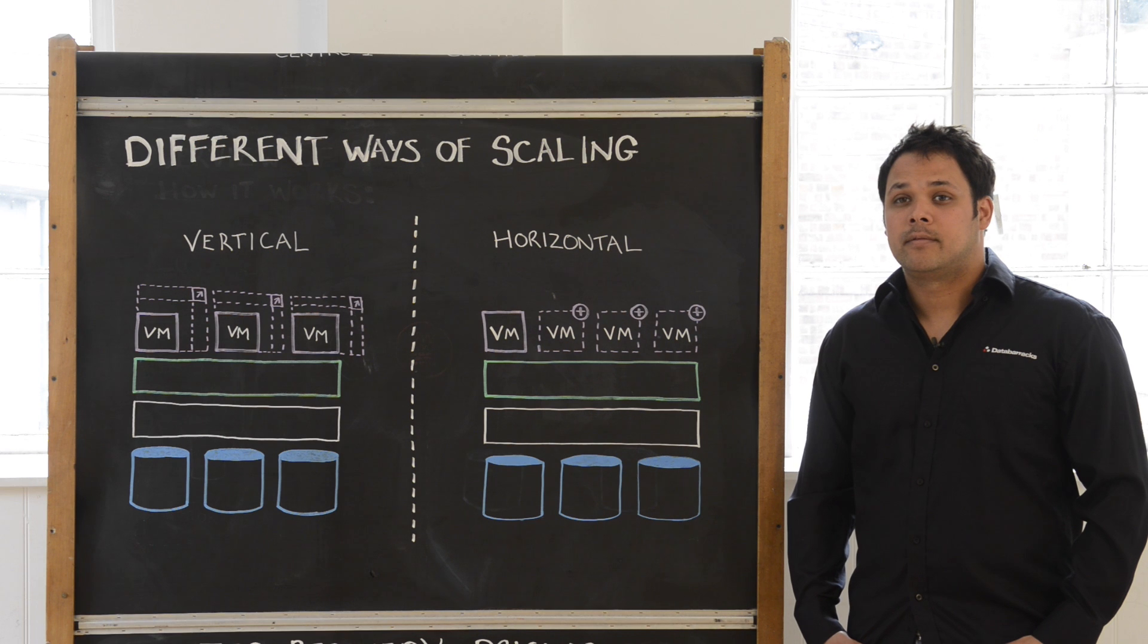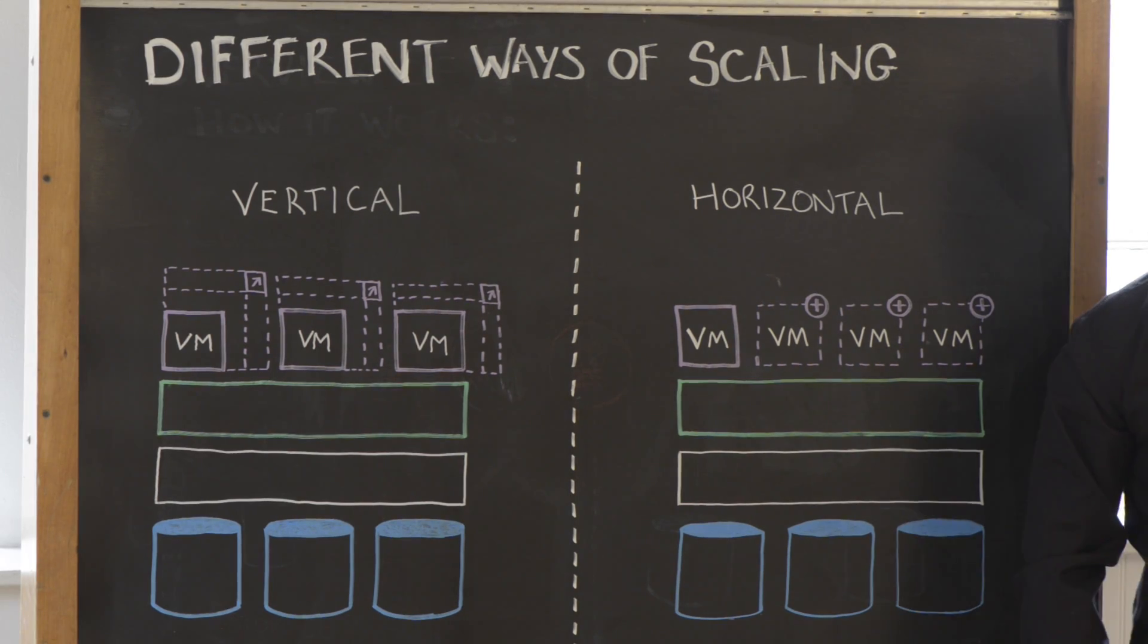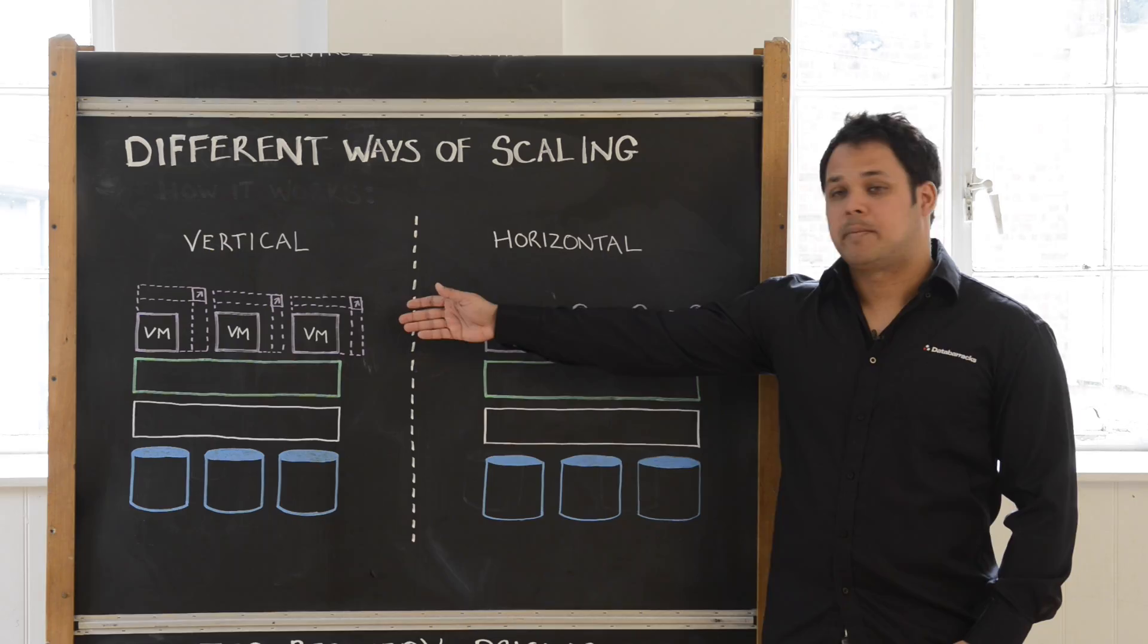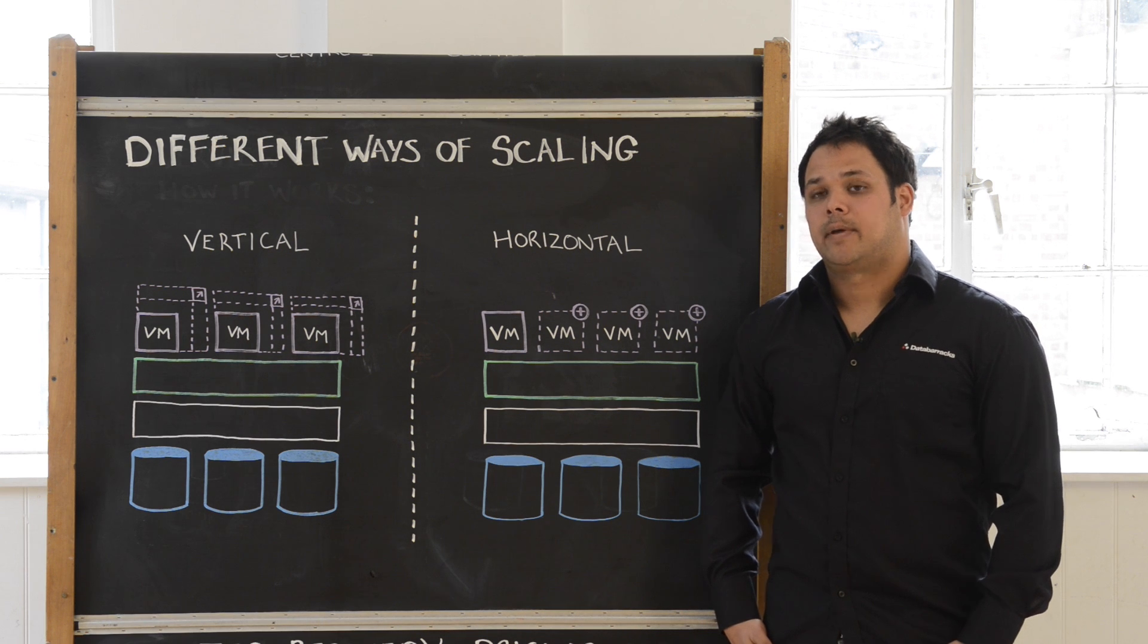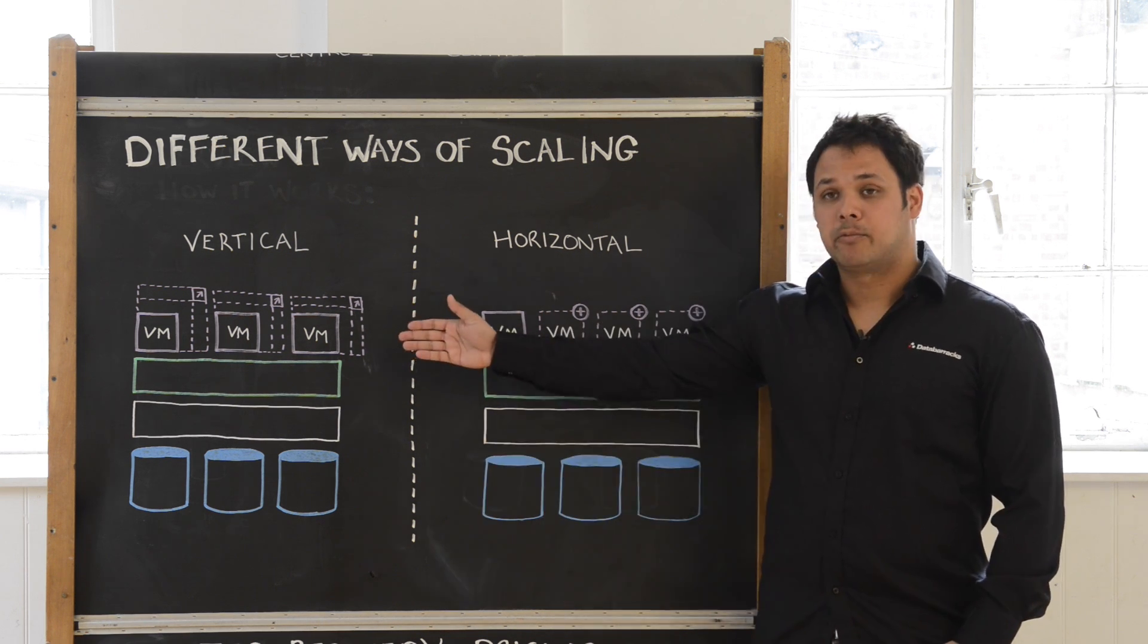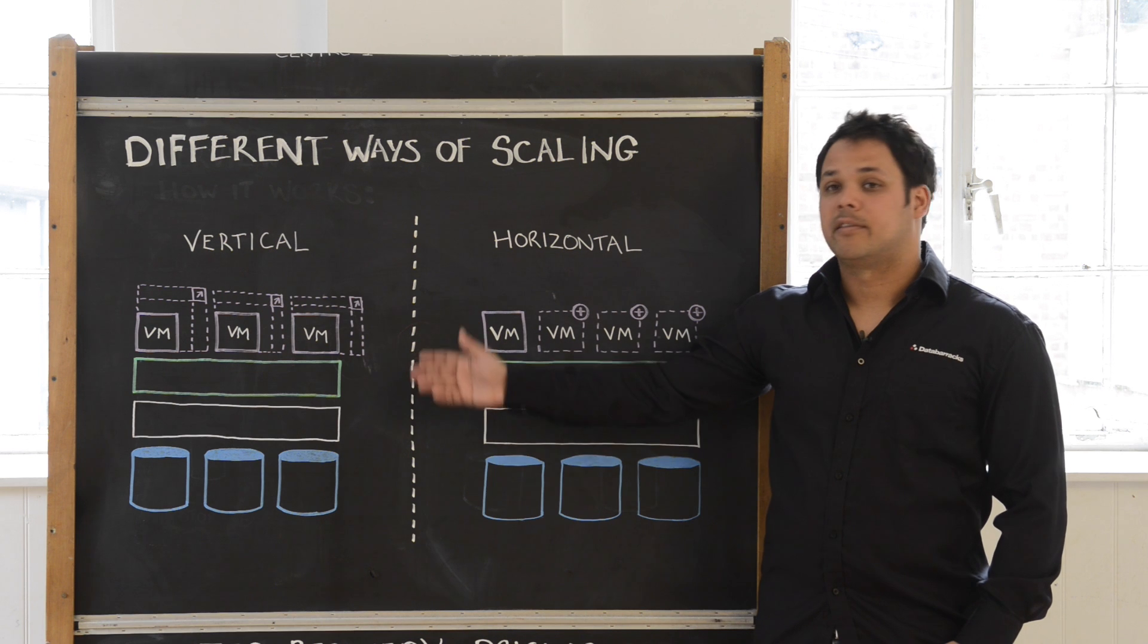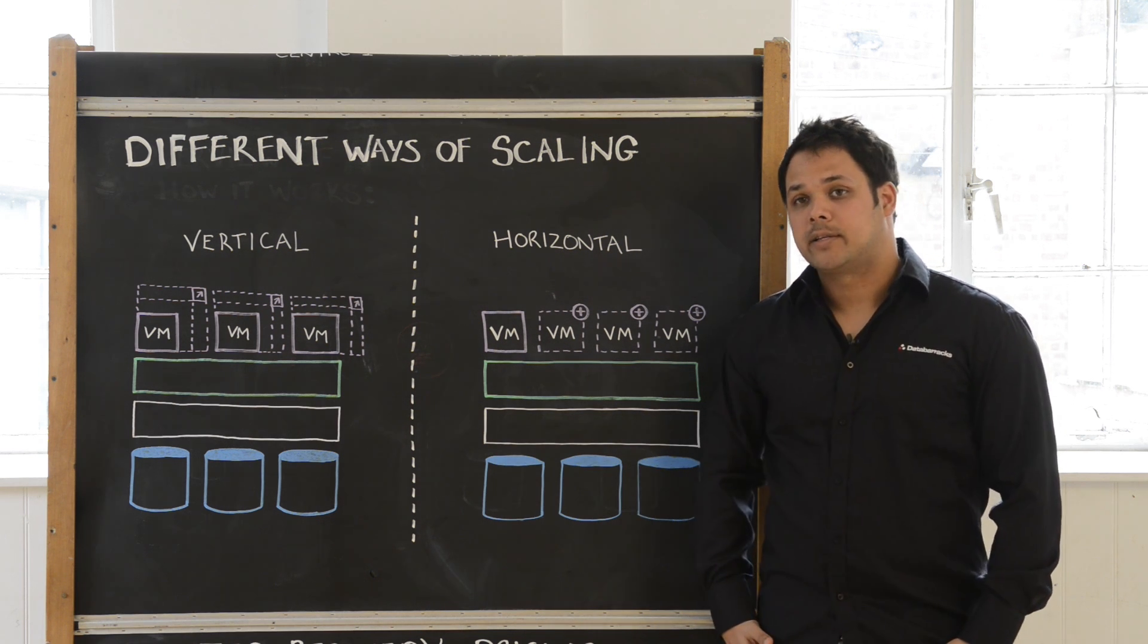There are two ways that you can scale in the cloud: vertically and horizontally. Vertical scaling in the cloud is the ability to add more resources to individual VMs. When an application requires more resources, you would increase the size of the virtual machines that the application is running on.